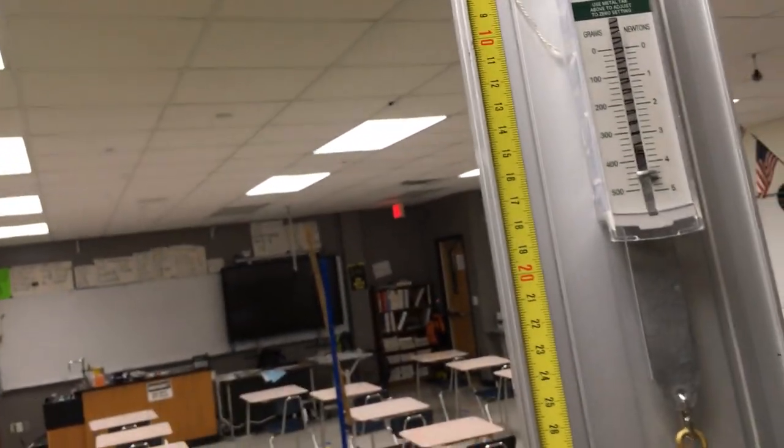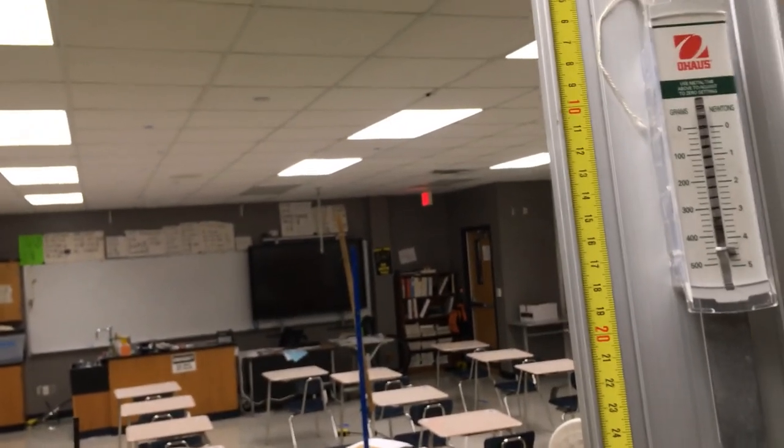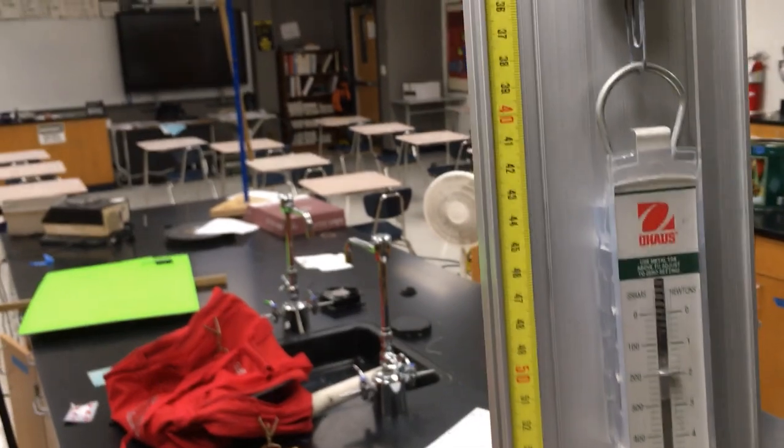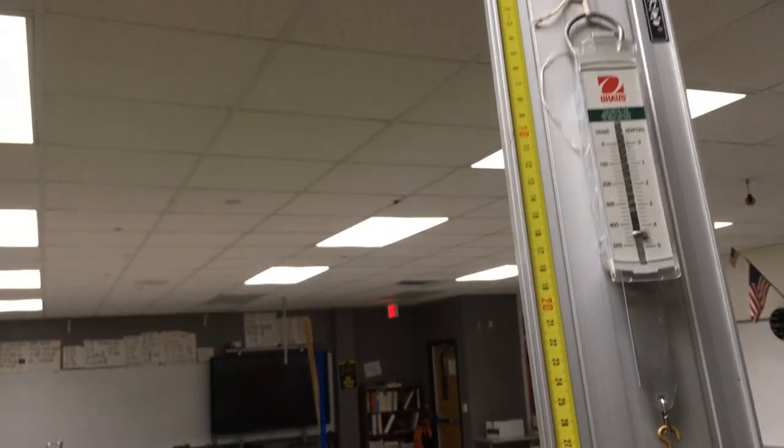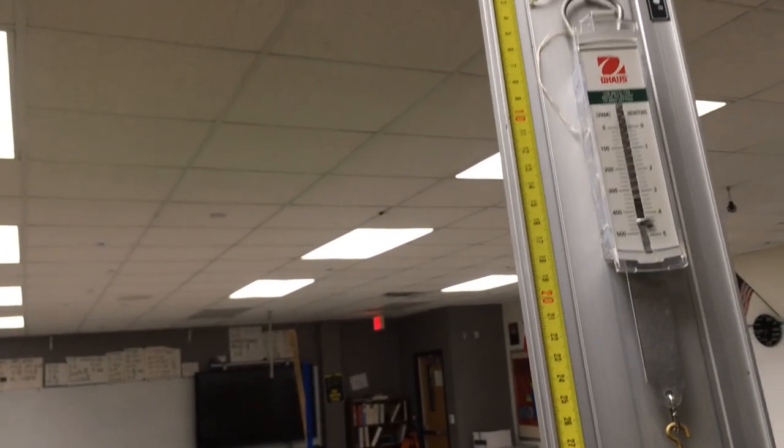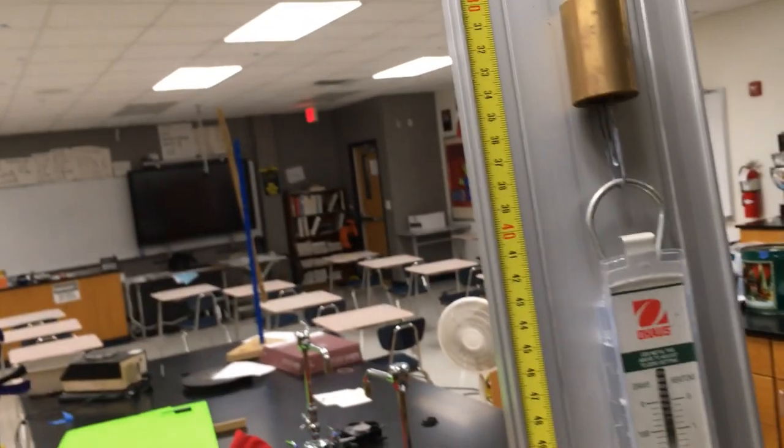Well, this one up here reads more than 400. Now, why doesn't it read 400? Well, because it's got to hold this up as well. If I had zeroed it so that it didn't read the mass of the spring scale, that would read 400 because there's two masses attached.